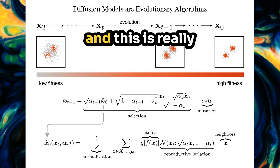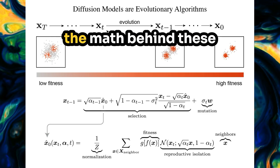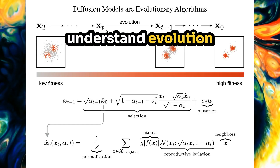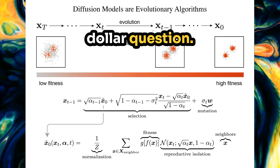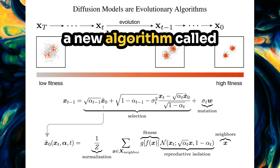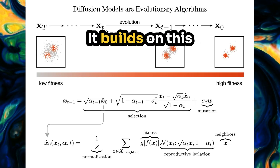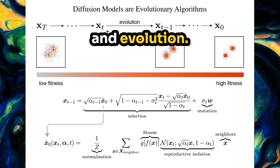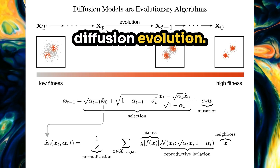So are they suggesting the math behind these AI image generators could actually help us understand evolution in a totally new way? That's the million-dollar question. And it gets even more interesting — the authors introduce a new algorithm called Diffusion Evolution, which builds on this connection between diffusion models and evolution. Tell me more about Diffusion Evolution.